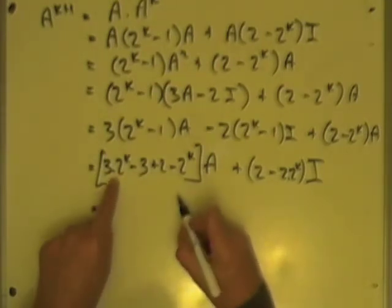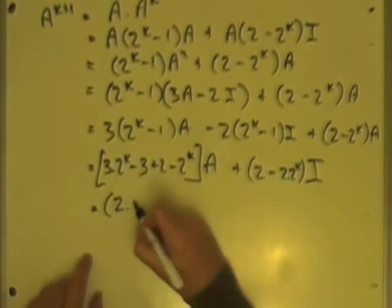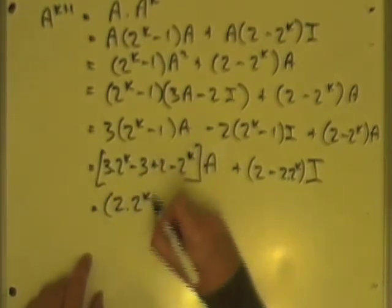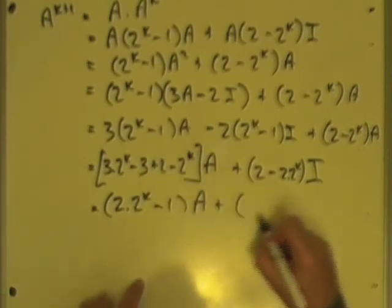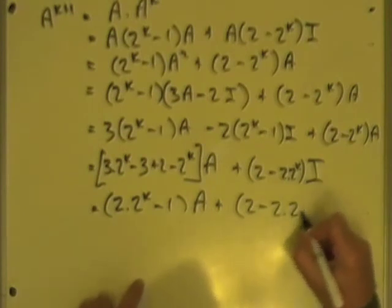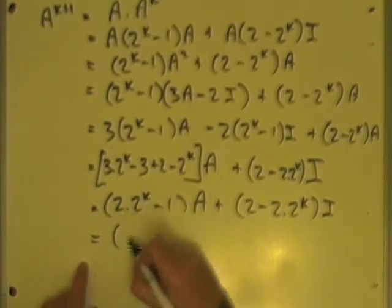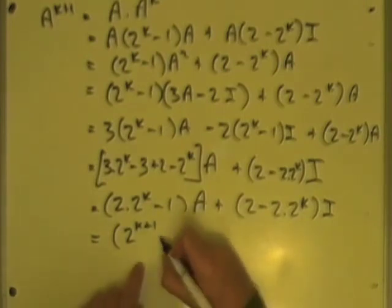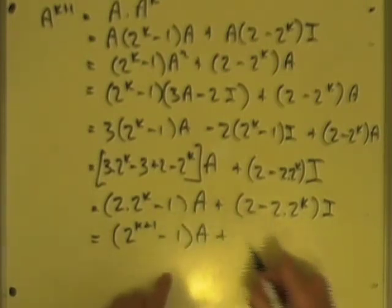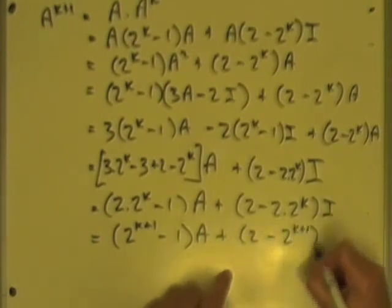So for the A coefficient: 3 lots of 2 to the k minus 1 lot of 2 to the k gives 2 lots of 2 to the k, which with one more factor of 2 becomes 2 to the power k plus 1, take away 1, lots of A. And for the I coefficient, 2 minus 2 to the k with one more factor of 2 becomes 2 minus 2 to the k plus 1, lots of I.